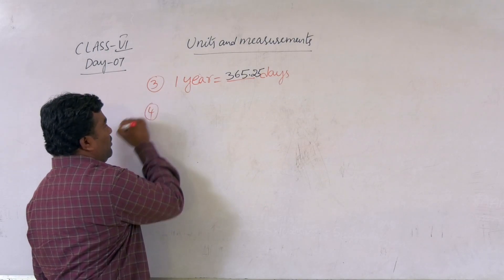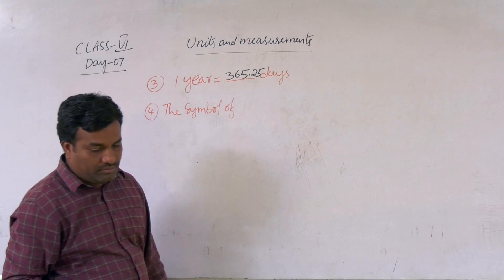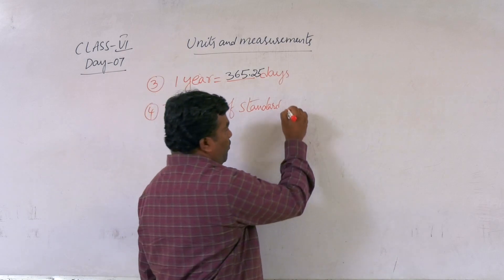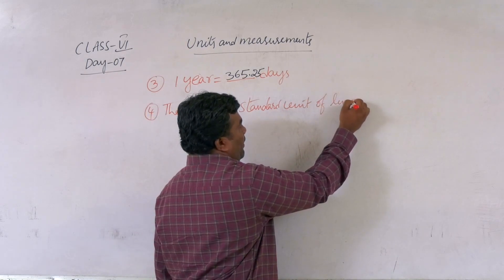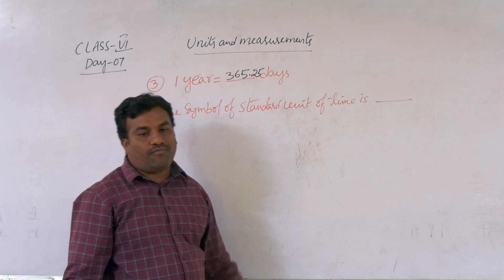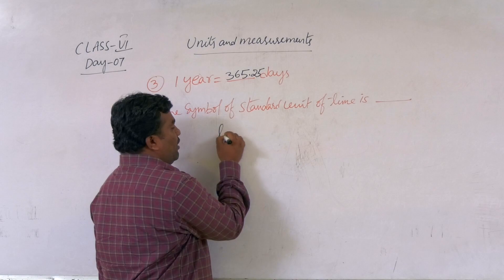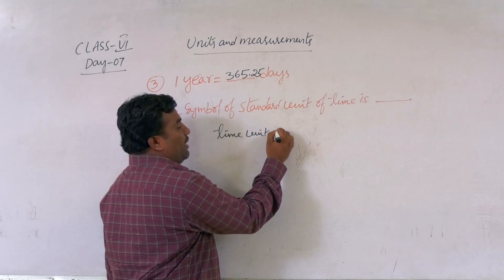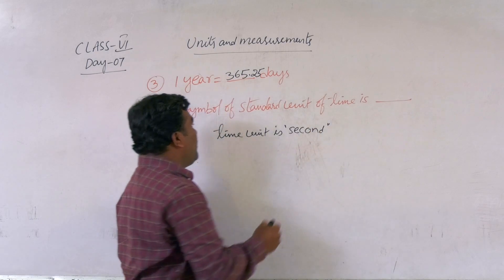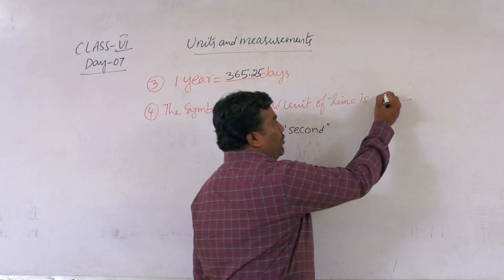The fourth question: what is the symbol of the standard unit of time? Time is always measured in seconds. The time unit is second, and the symbol of the standard unit of time is S.